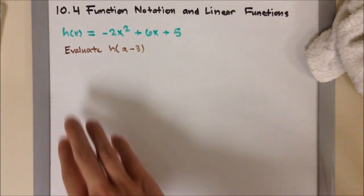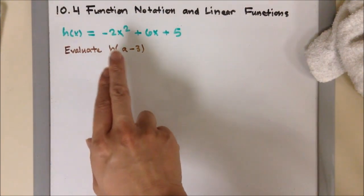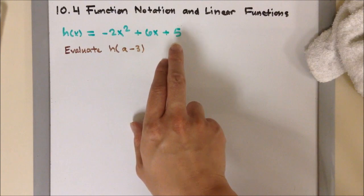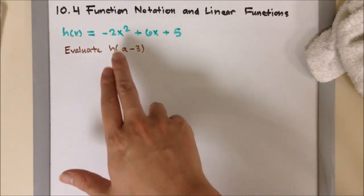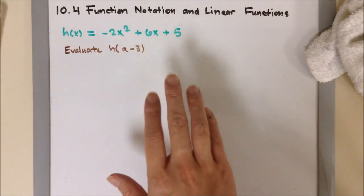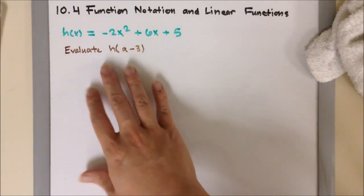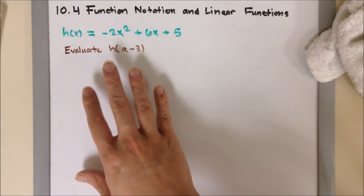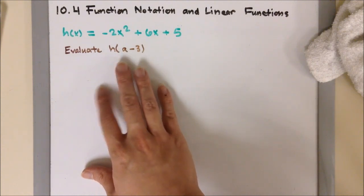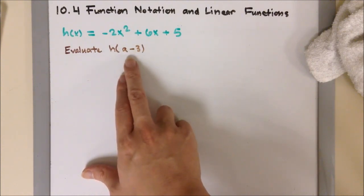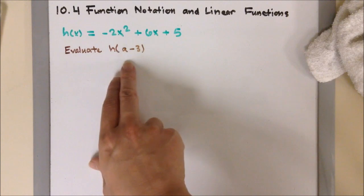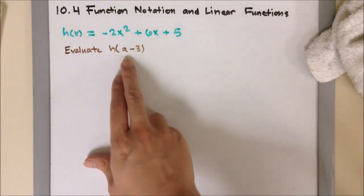In this next example, we have h of x equals negative 2x squared plus 6x plus 5. Now, we have an x squared and x. So it's going to be a different way of the way it looks, but the process is going to be the same, especially when we're evaluating it with a binomial term, a minus 3. So again, the question is, evaluate h of a minus 3.